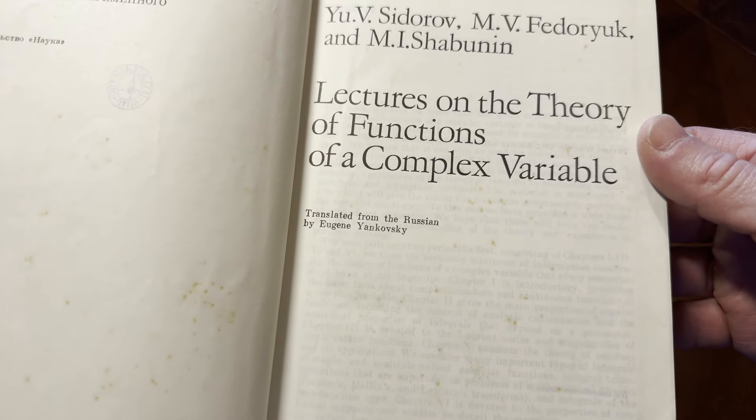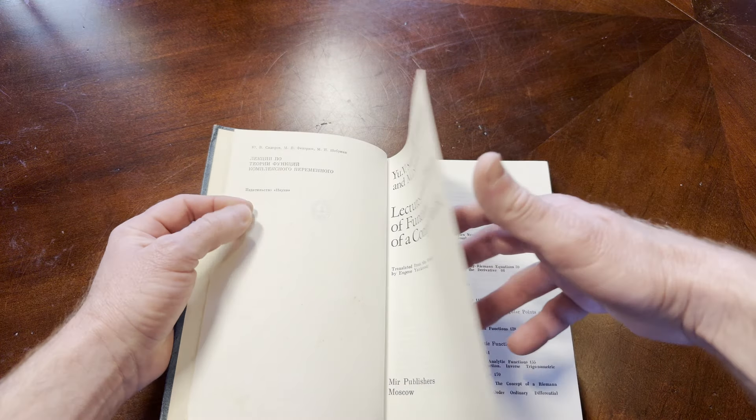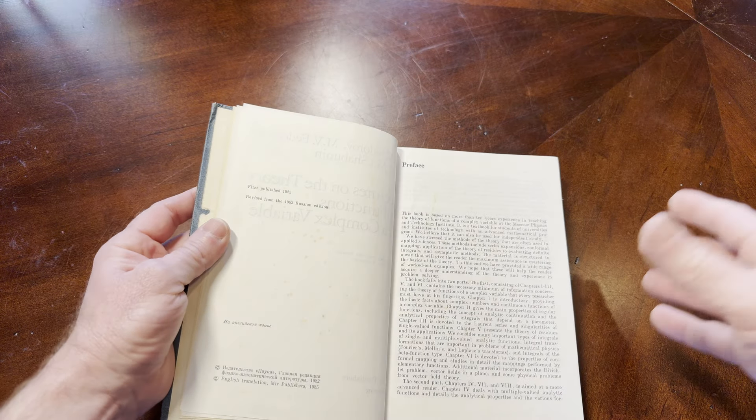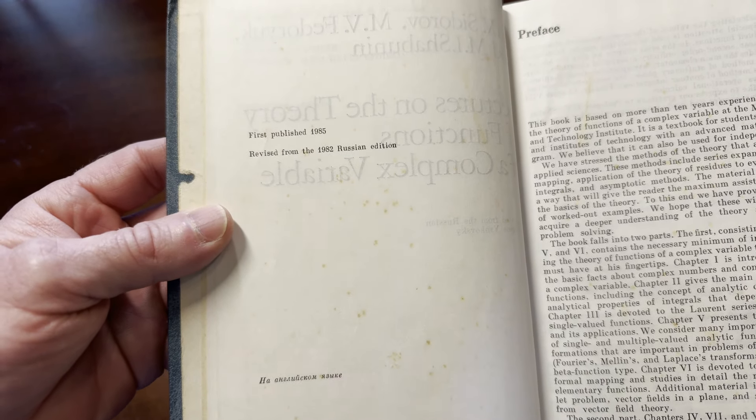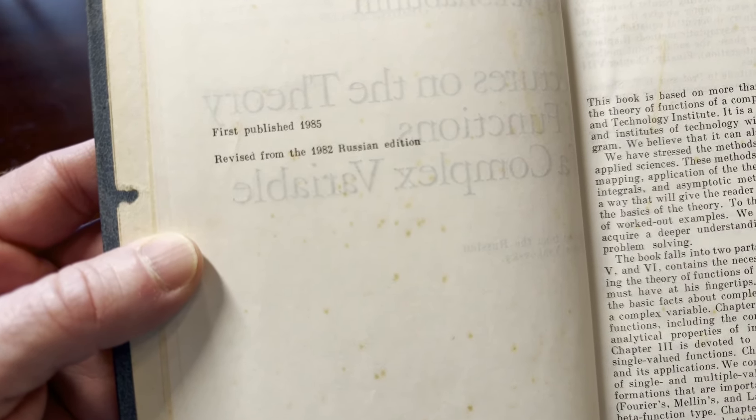Let's just take a look here at the inside. This book is translated from the Russian by Eugene Yakovsky. These books typically have a treatment of the material that is very different from a lot of the other popular books that you might be familiar with. This one was first published in 1985, revised from the 1982 Russian edition.